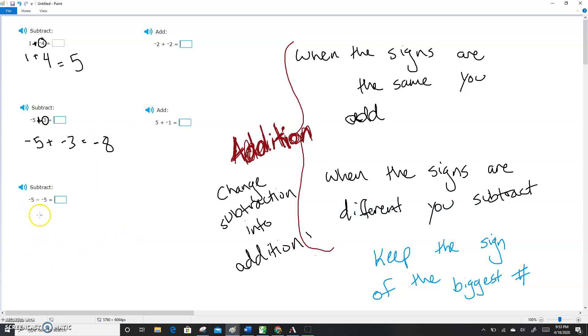Let's look at one more. Negative five minus negative five. Well, again, I'm going to change my subtraction into addition. It's going to become negative five plus, and then I have to change the sign of my next number, negative five plus positive five. Now the signs are different. And when the signs are different, you subtract. Five minus five equals zero.